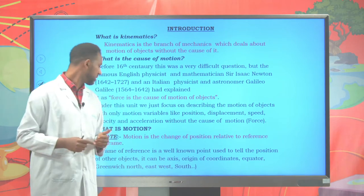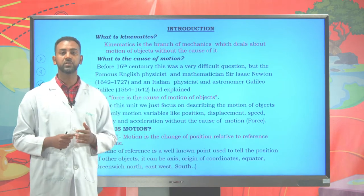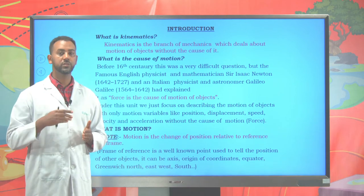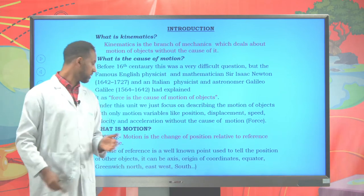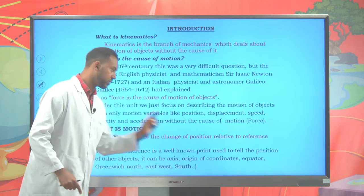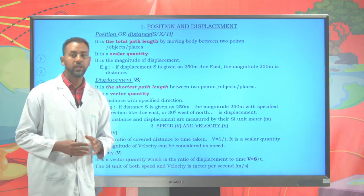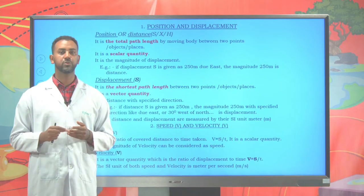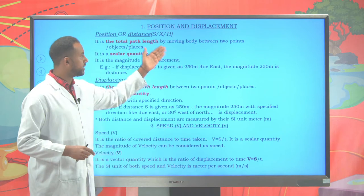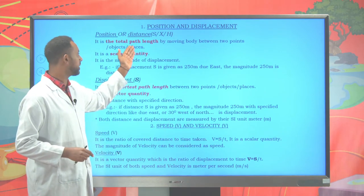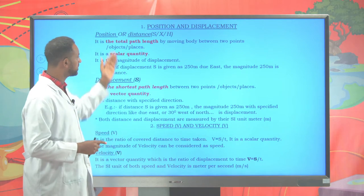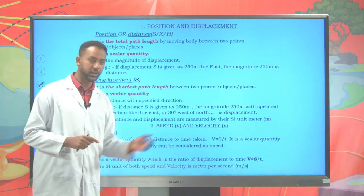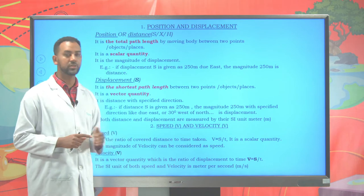First, let's define what motion is. Motion is the change of position of something with respect to a frame of reference. A frame of reference is something important to designate the location of other objects. When discussing motion, there are important motion parameters: position and displacement, distance and displacement, speed and velocity, and acceleration.